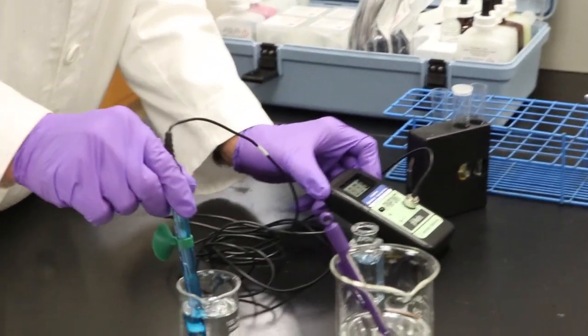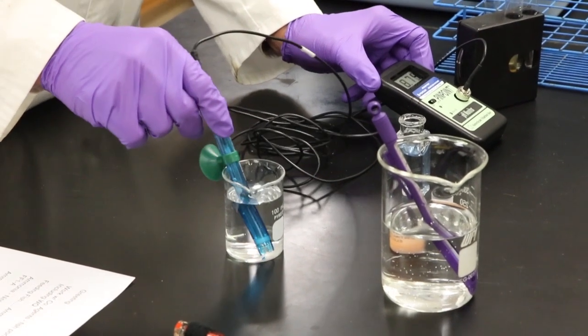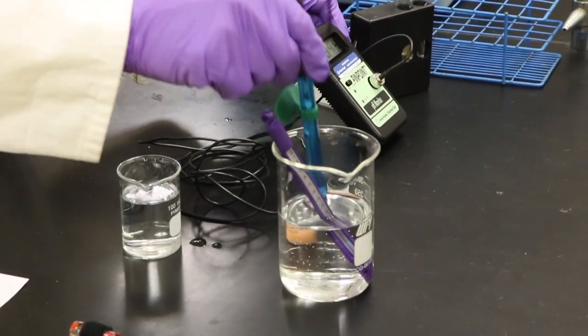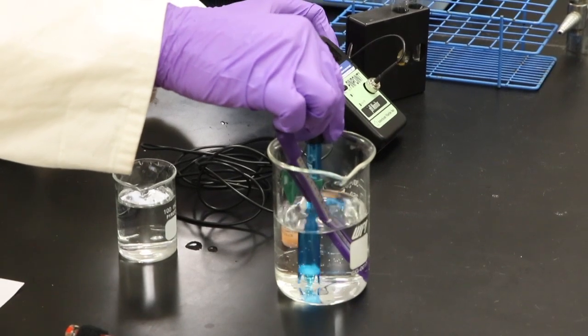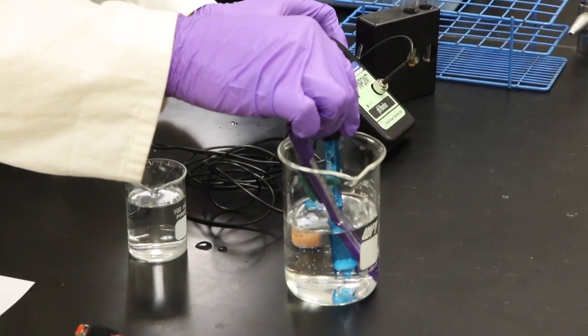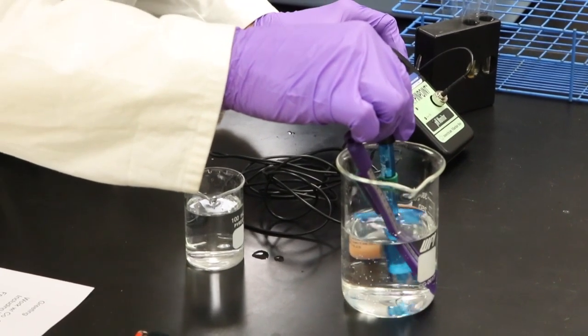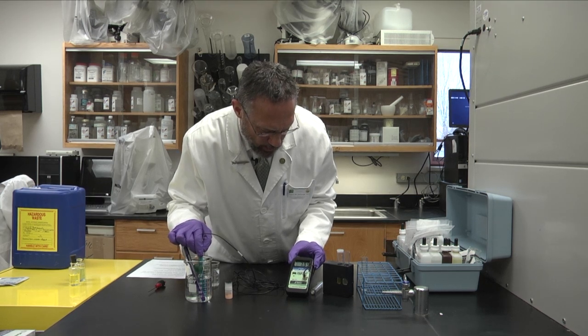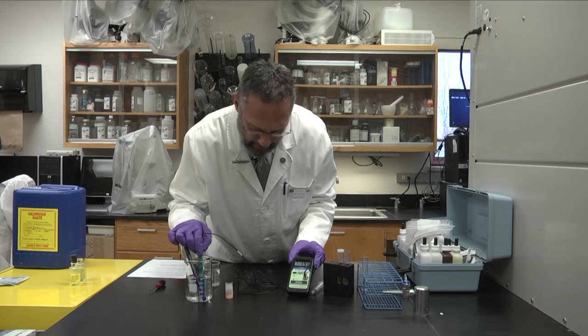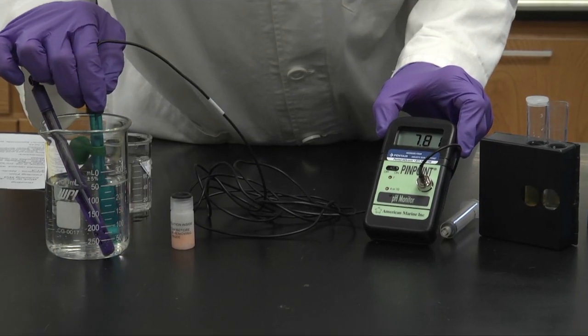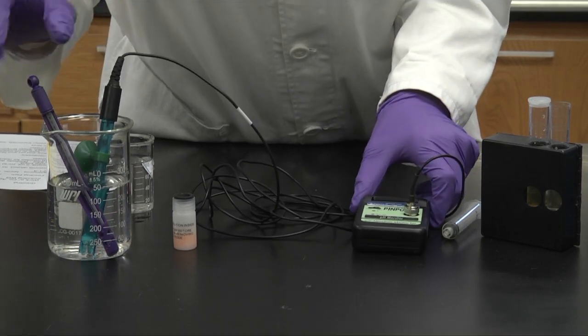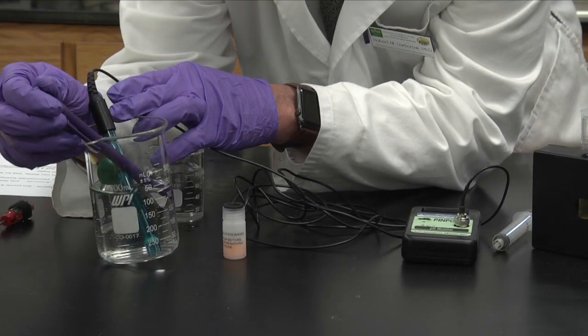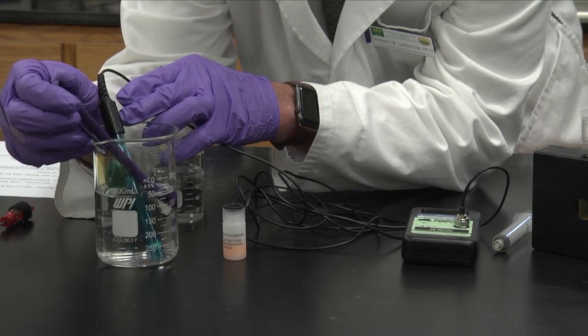Now since it's calibrated I'll rinse the probe off again. I'll set this aside here and I'll put the probe into the solution, into the tank water solution that I'm interested in checking the pH for, and you see the pH is approximately 8.1. Looks like it's dropping down a little bit to 7.97. Okay so 7.8 is the rough pH of this solution and the temperature is 18 degrees centigrade, 18 degrees C.